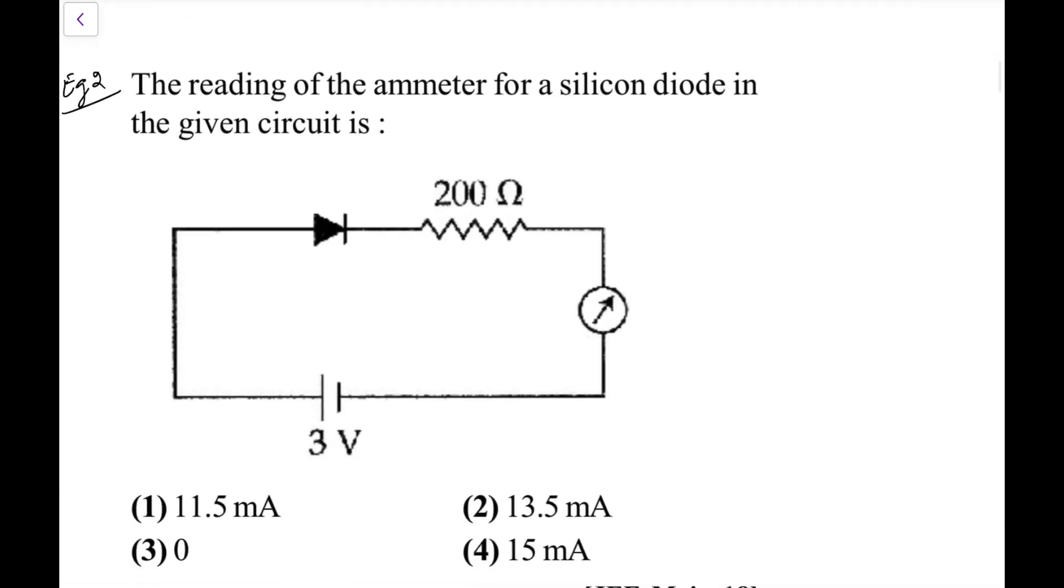Similarly, here there is a tweak in it. The reading of the ammeter for a silicon diode - whenever silicon diode is given, we typically take even when it is forward bias, we take a drop of 0.7 here. For germanium we take 0.2 or 0.3 volt drop. Here we will take as 0.7 volt drop. So the effective drop remaining on this would be 2.3 volts.